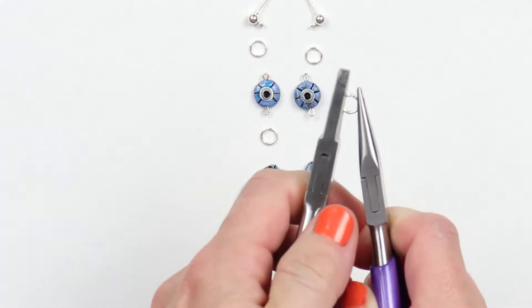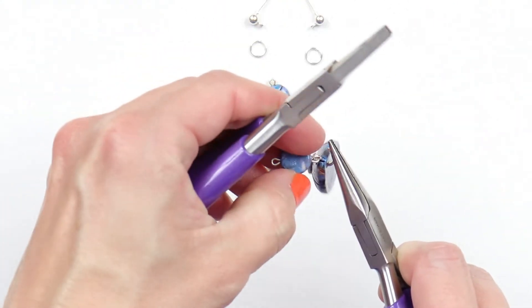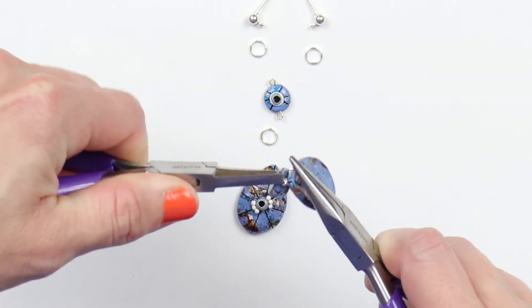To assemble your earrings, all you'll need is a jump ring attached to the top of the bottom piece. Then attach a jump ring to the top of your piece.